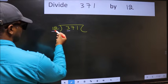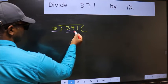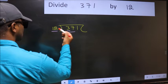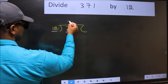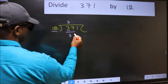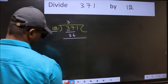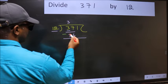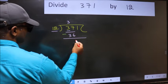3 is smaller than 12, so we should take two numbers: 37. A number close to 37 in the 12 table is 12 threes, 36. Now you should subtract. 37 minus 36 is 1.